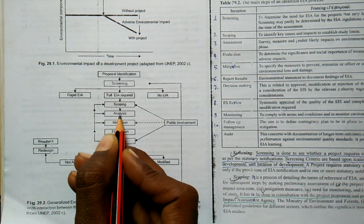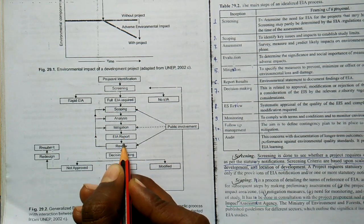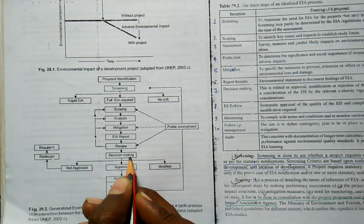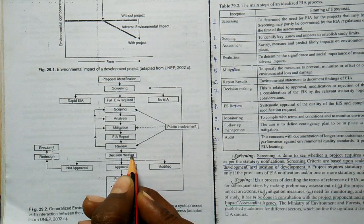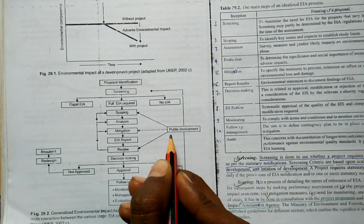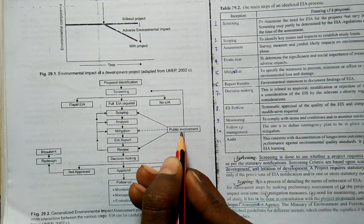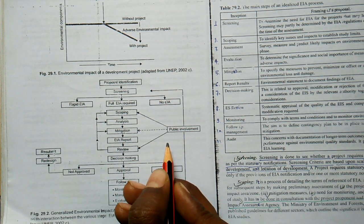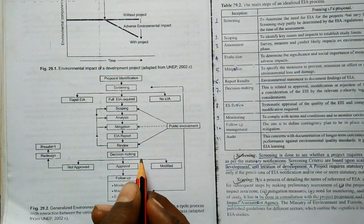Scoping, analysis, mitigation, EIA report, review, and thereafter decision making. You must note here that in scoping, mitigation, and review, public involvement is made compulsory by MOEF, Ministry of Environment and Forest.